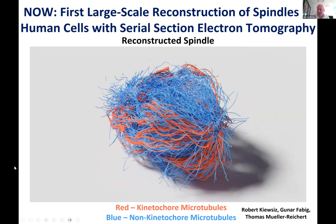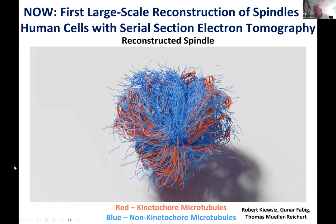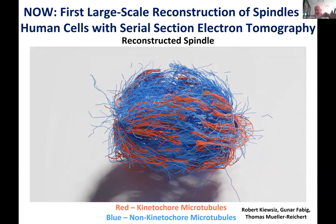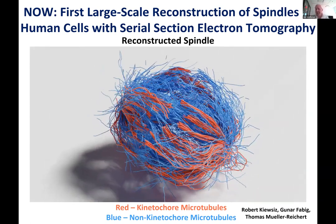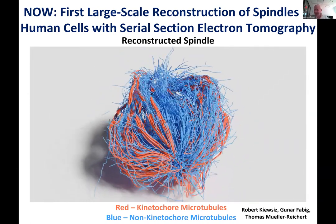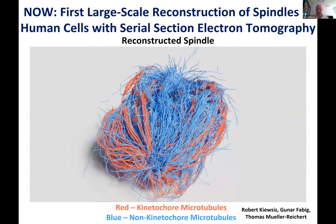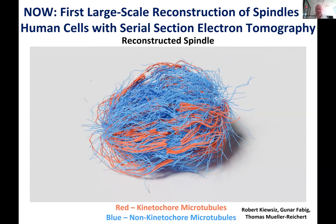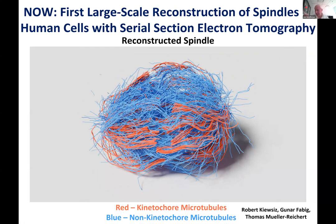From this reconstruction, one can see every single microtubule in the spindle — its exact conformation, exact length, and exact trajectory. Here is an example of one of these spindles, where the kinetochore microtubules are in red and the non-kinetochore ones are in blue. This is, in my mind, completely amazing, phenomenal data, and there's just a huge amount to learn from it.